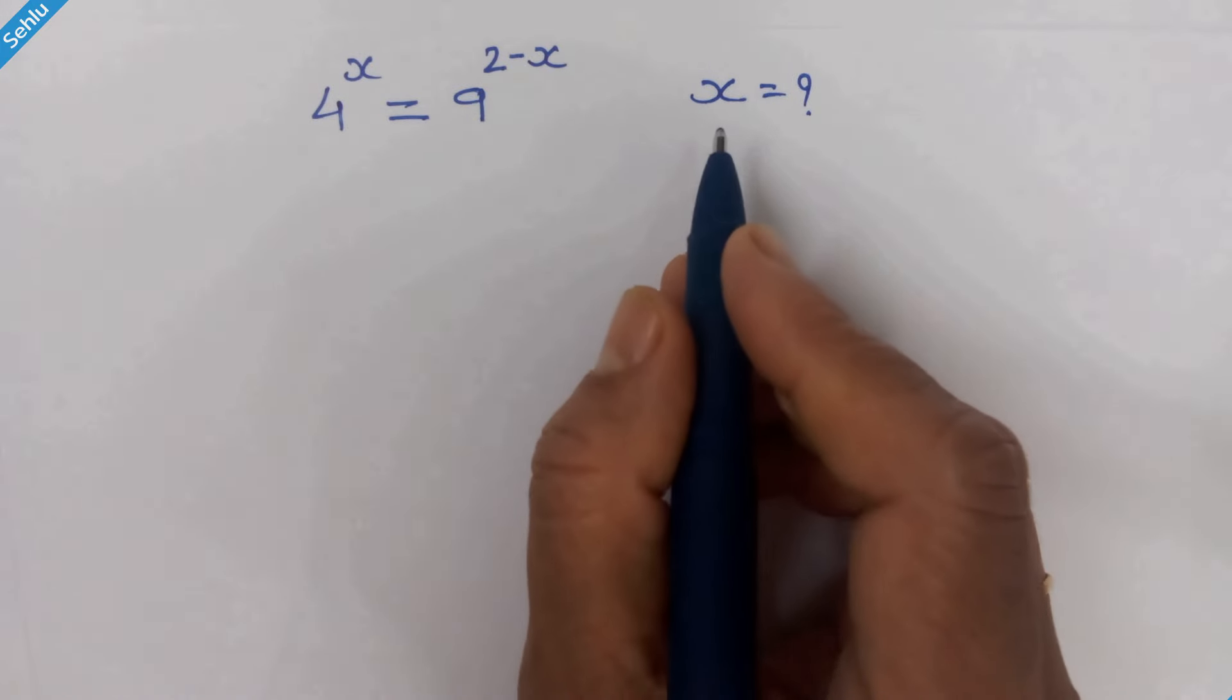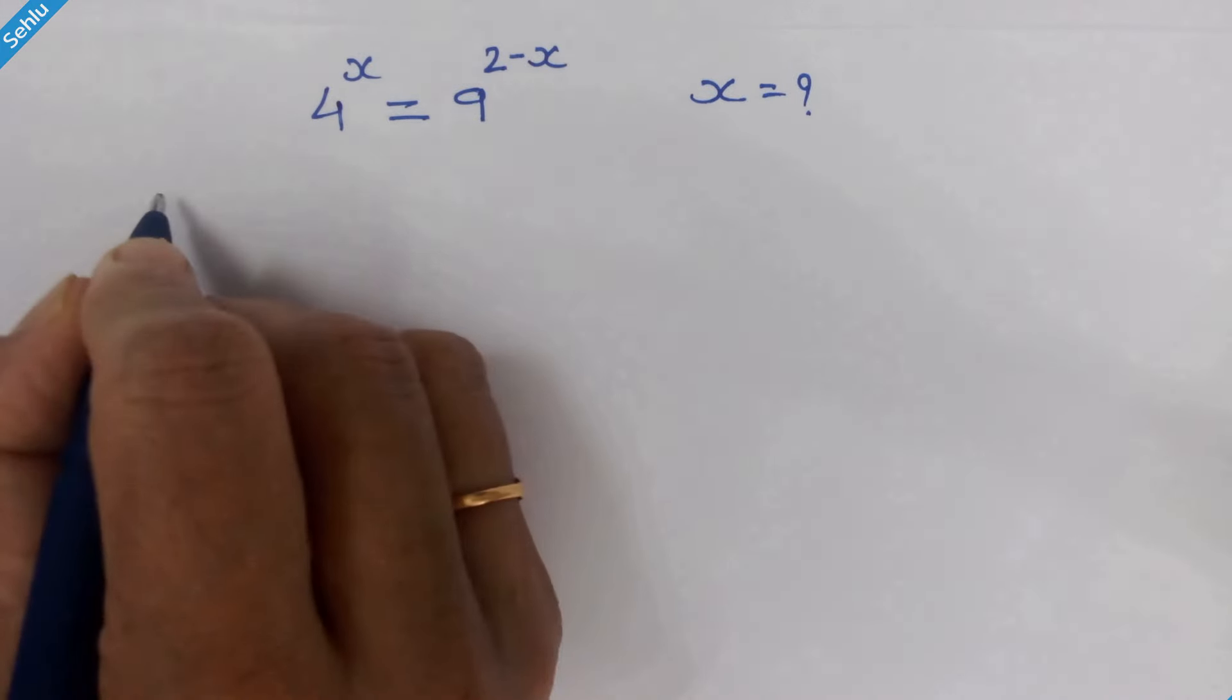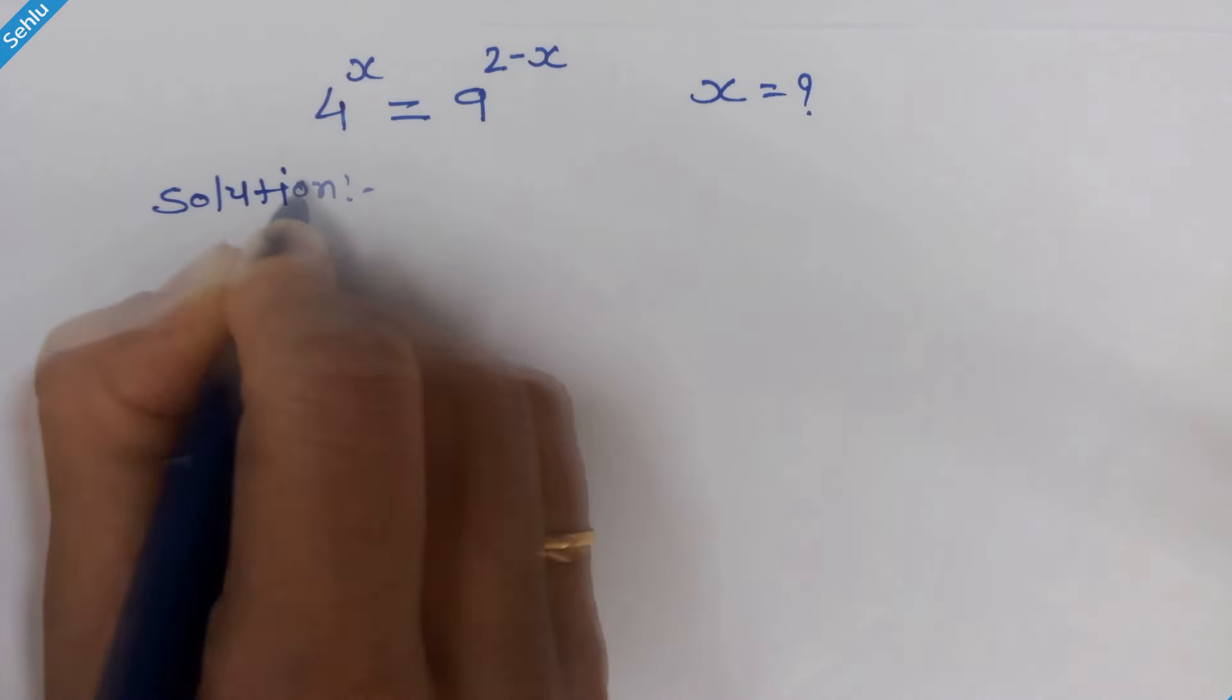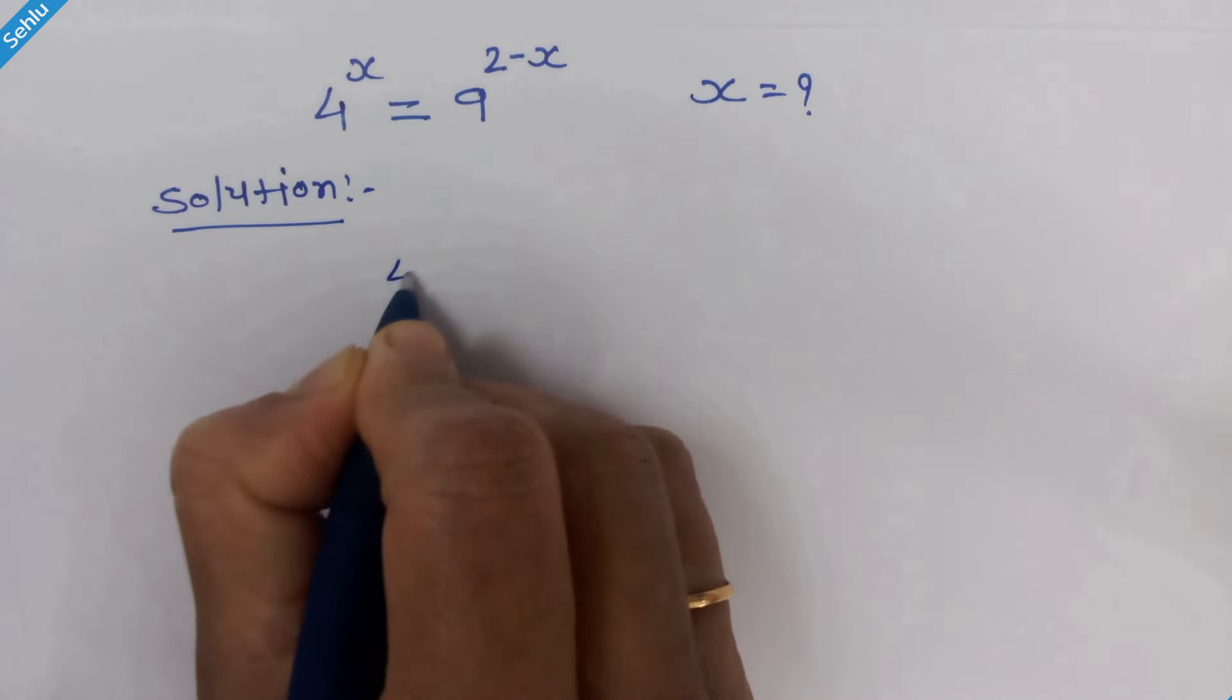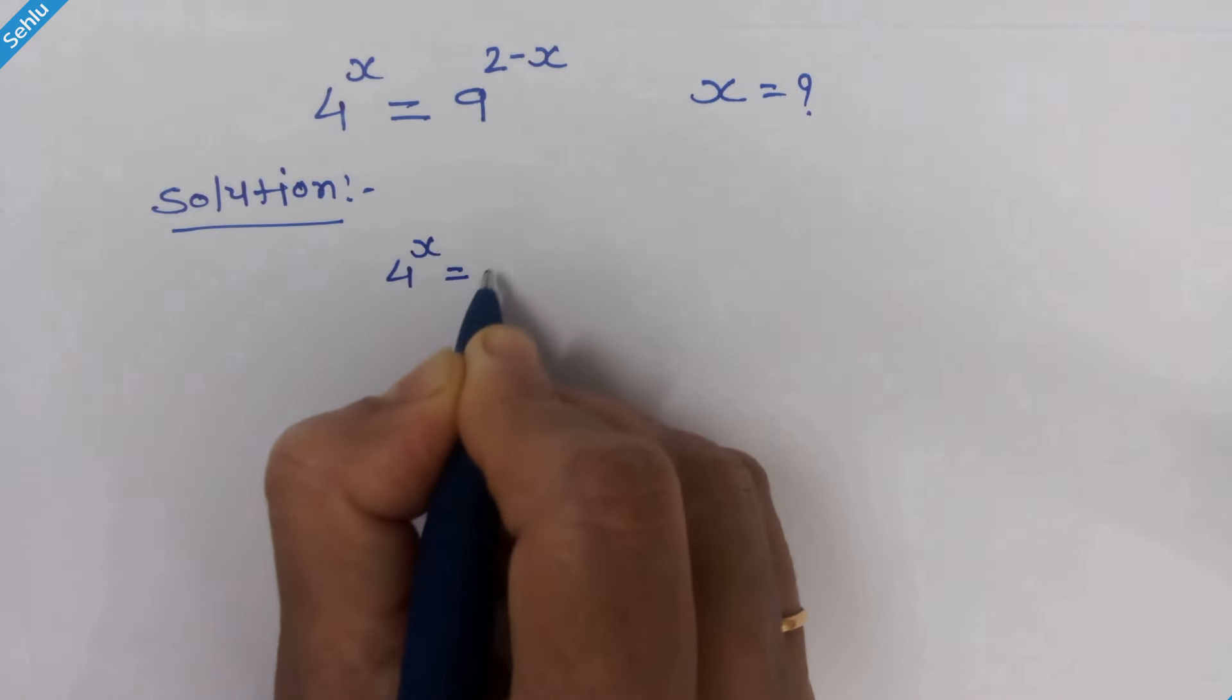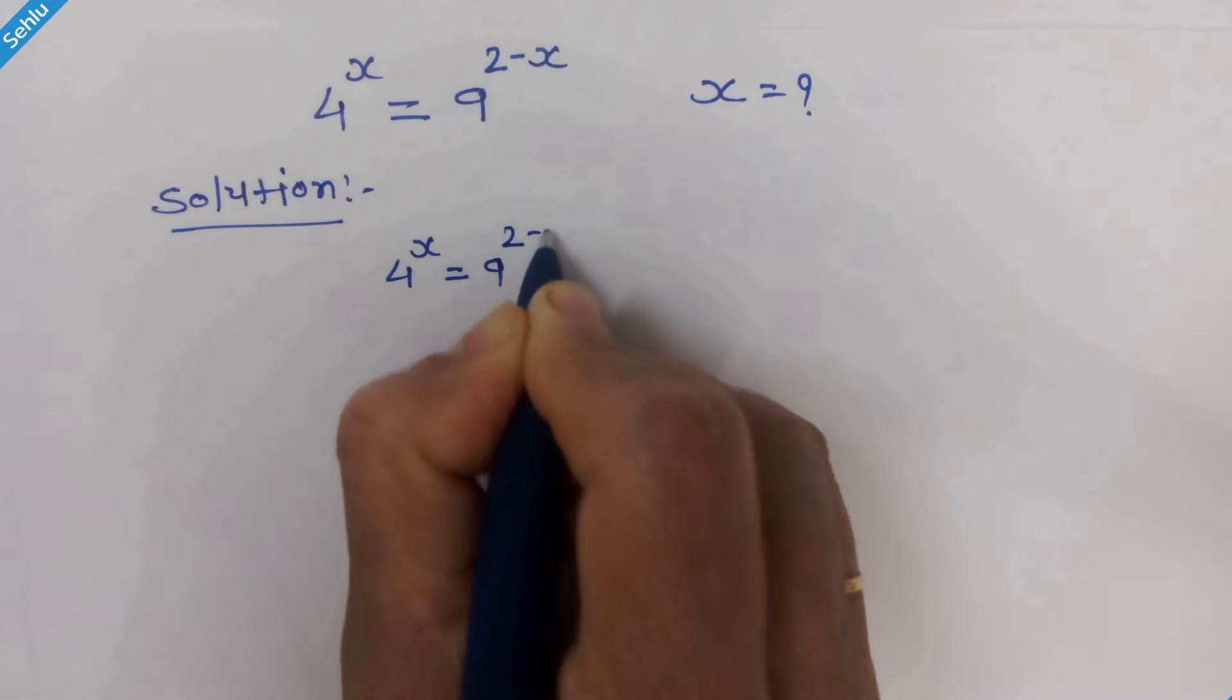Hello friends, let's find the value of x. Our question is: 4 raised to x equals 9 raised to 2 minus x.